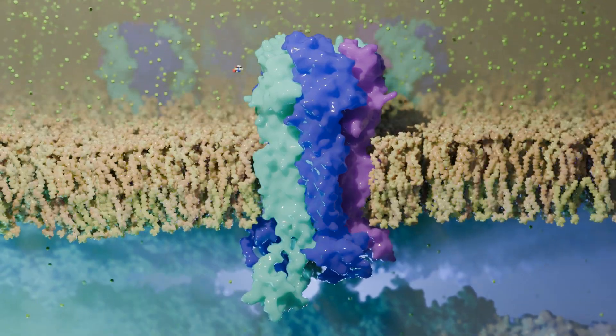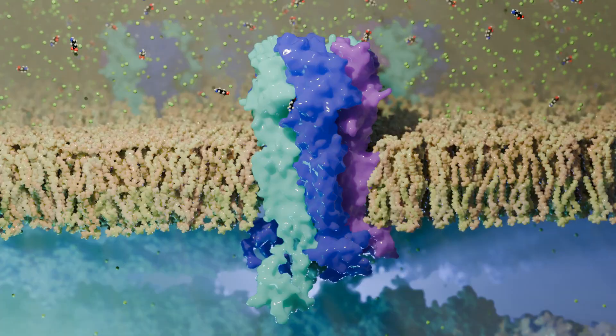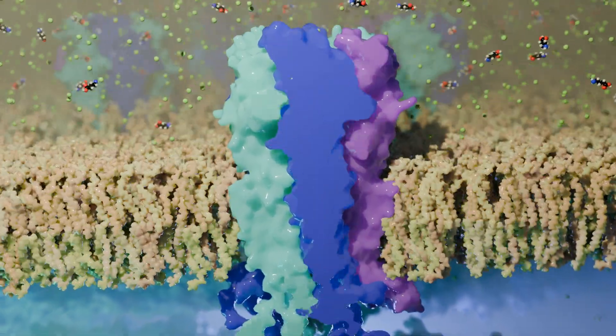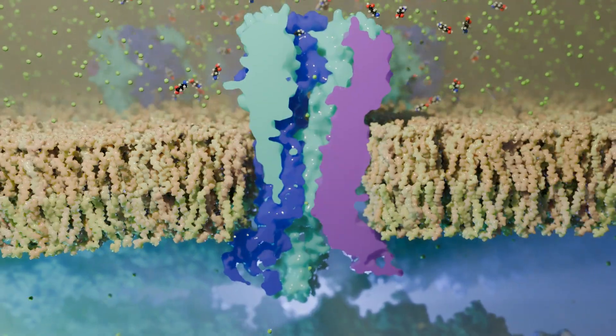When the presynaptic neuron floods the synaptic cleft with GABA, GABA can bind to the receptor. It changes the conformation slightly, thereby allowing chloride ions to rush into the cell.